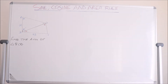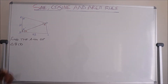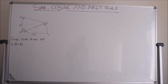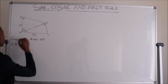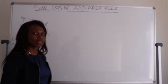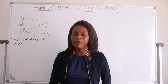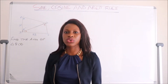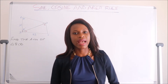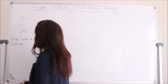We have two triangles here in this question. The first triangle is triangle ABD and the second one is triangle BCD. The question says we must find the area of triangle BCD, which is the second triangle here. What we need in order to find the area of a triangle is two sides and also the included angle of that triangle.